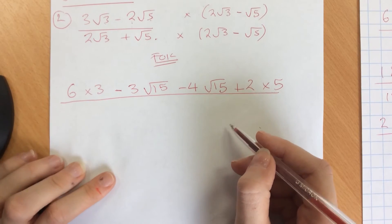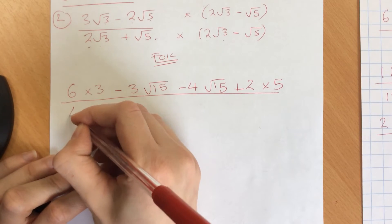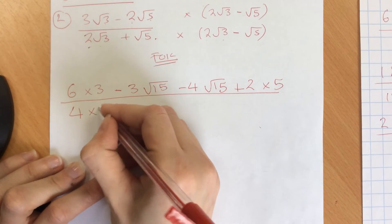All over, same on the bottom now, FOIL on the bottom. So 2 root 3 times 2 root 3. 2 times 2 gives us 4. Root 3 times root 3 gives us 3 in there times.